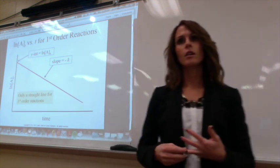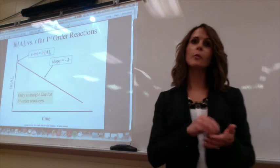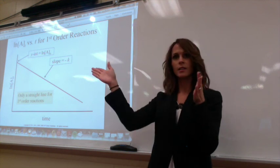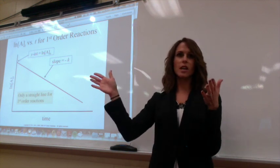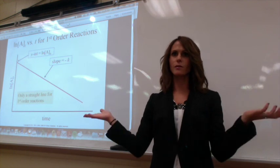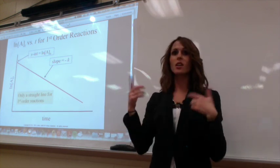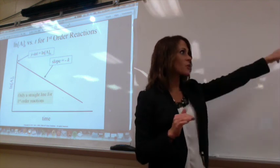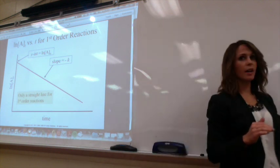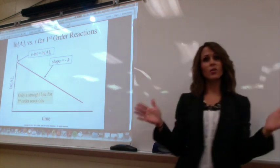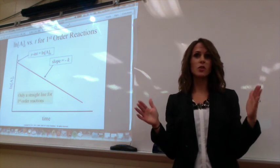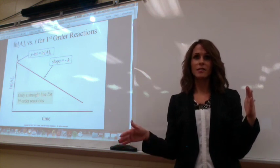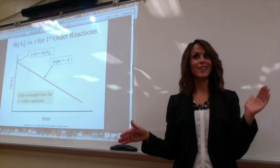A student asked: isn't the straight line for zero order? The straight line represents any order — zero, first, or second. What you do as a chemist is take your concentration data, likely from a spectrophotometer using Beer's Law, and make three plots in Excel. Your y-axis changes each time. Then you look at which one gives you the straight line, and that tells you the order of your reaction. That was a great question — it helped everybody.